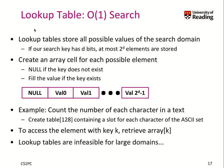Here is our answer: lookup tables. Lookup tables store all possible values of the search domain. If our key has d bits, we have to store 2^d elements. We create an array with a cell for each possible element — if the key does not exist, we store null; otherwise we fill in the value. So we have elements that don't exist and some values, up to 2 to the power of d elements.